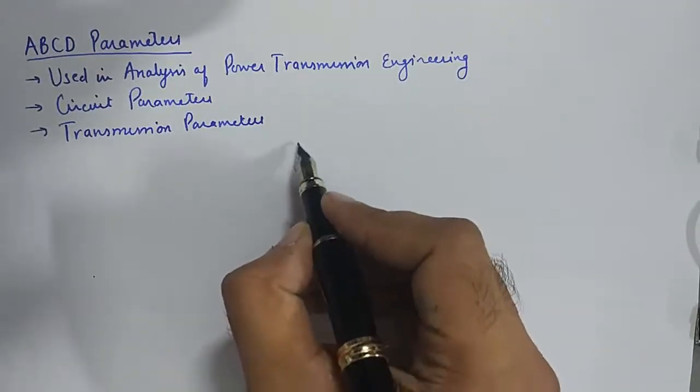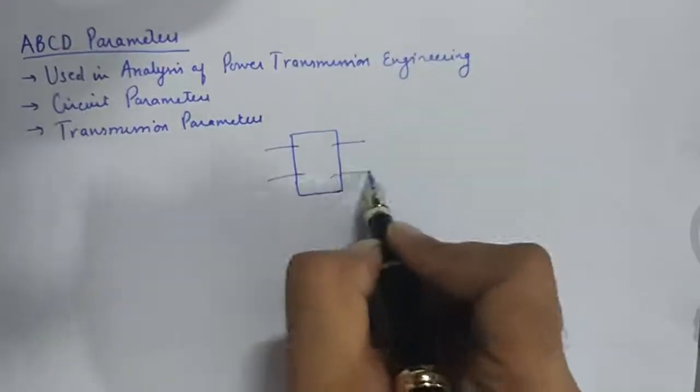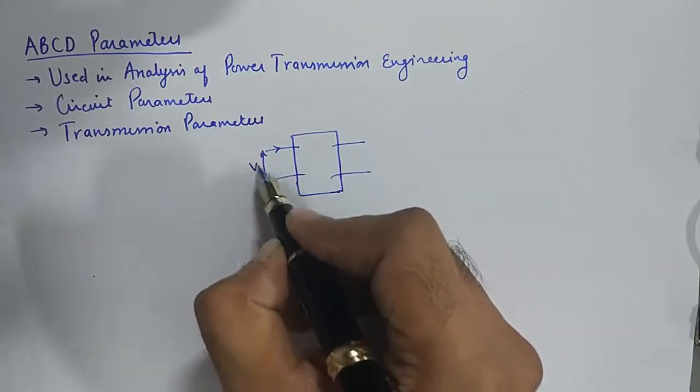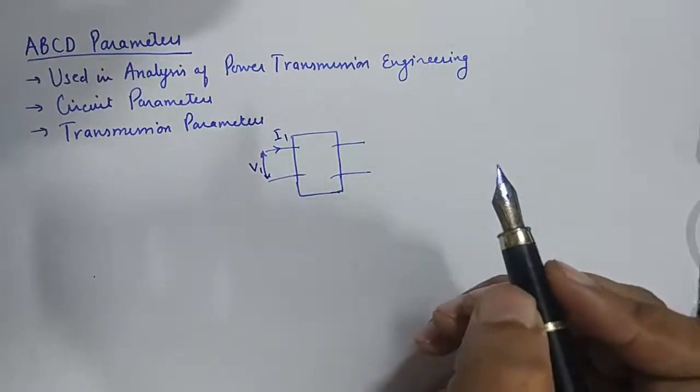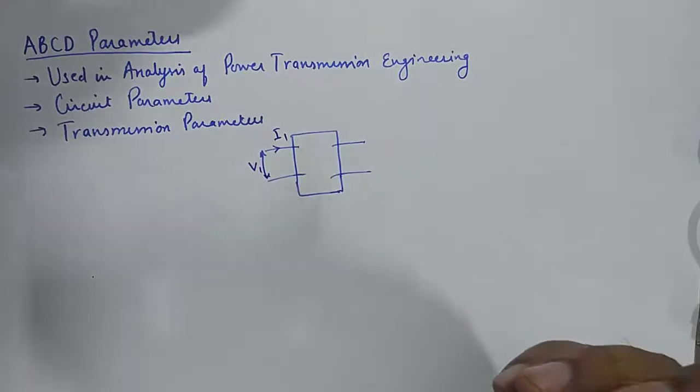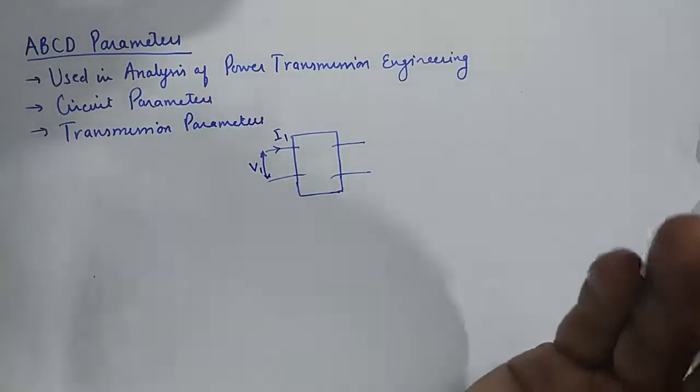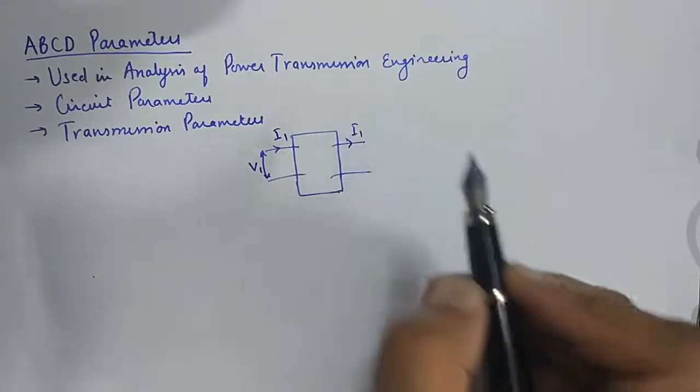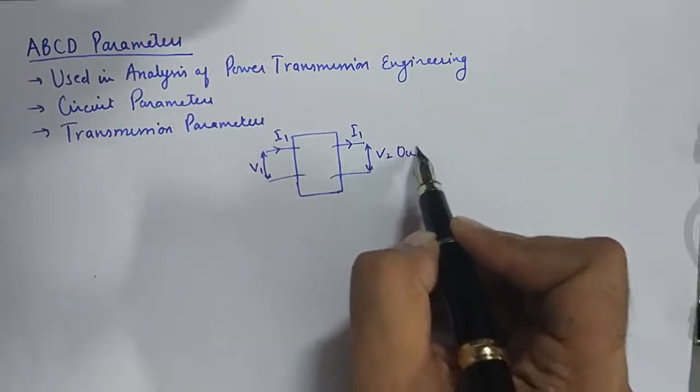If we talk about the circuit diagram of a two-port network, usually the current at the input is represented like this and the current at the output is represented in the inward direction. But in case of ABCD parameters, the output port, which is supposed to be the receiving end, the current is taken to be in the opposite direction, and that's what changes things.